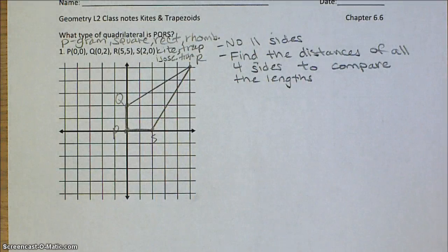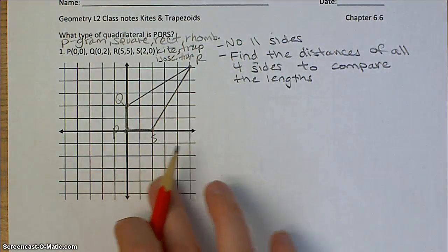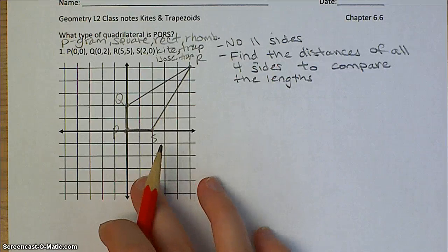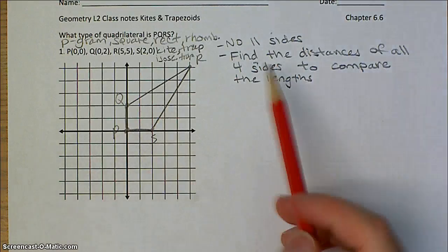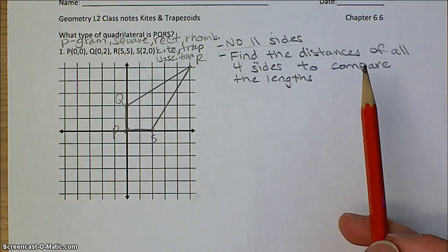So keep in mind, it could be any of those. Now, I'd always recommend that you graph your points and take a look at it. Clearly this is starting to look like a kite, but now we just need to prove that it's a kite. We know that there's going to be no parallel sides on a kite, so we don't really have to do anything with slopes.